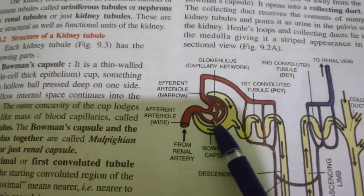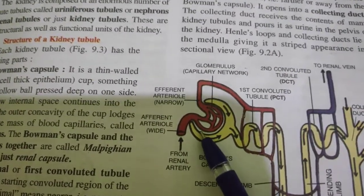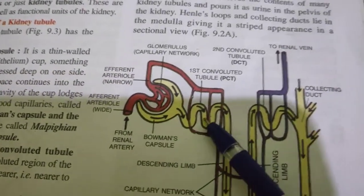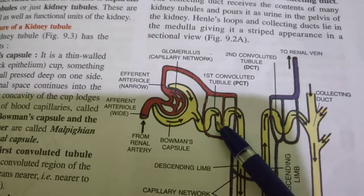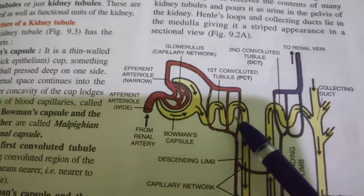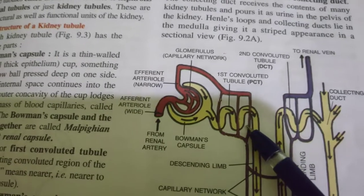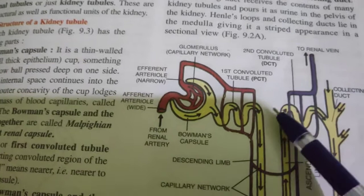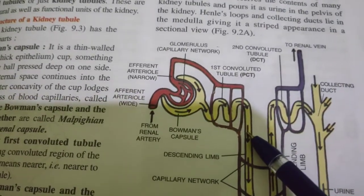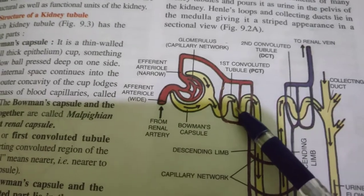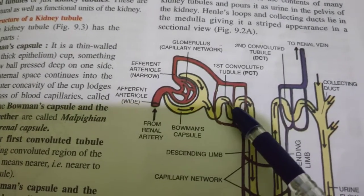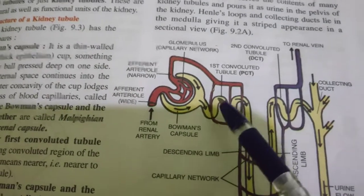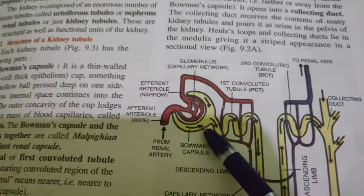The second stage is reabsorption. The glomerular filtrate entering the renal tubule is not urine. It is an extremely dilute solution containing a lot of useful materials like glucose and some salts like sodium. As the filtrate passes down the tubule, water is reabsorbed along with other useful substances such as sodium and glucose.